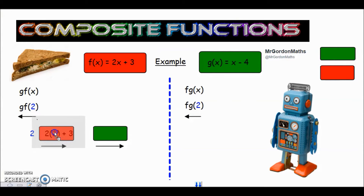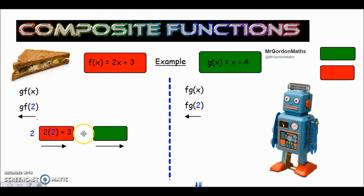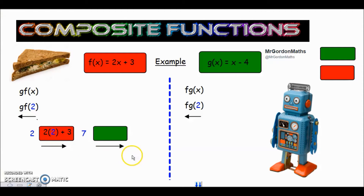You can see what I've done here — instead of 2x plus 3, I've replaced the x with a 2, so I've got 2 times 2 plus 3. Now if we work that out, what's the output once we've gone through the first function, the f one? 2 times 2 is 4, plus 3 gives us 7. So the output is 7. We need to put that in because that's the number going through the second function, the g one, the green one.